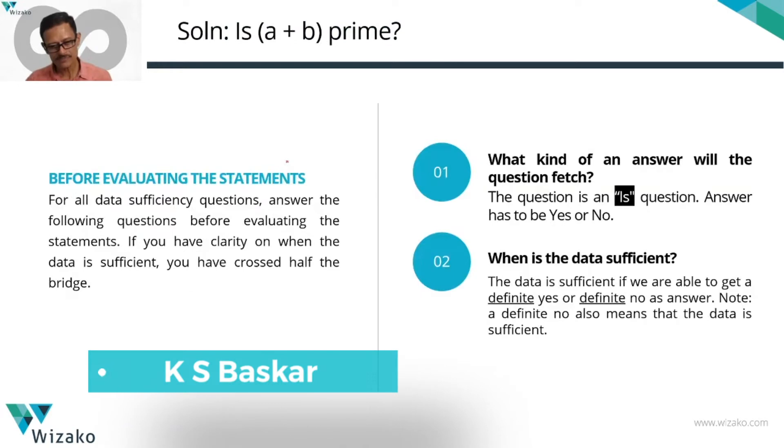When is the data sufficient? When we're able to get a definite yes or a definite no. If a + b is certainly prime, the information is sufficient. Or if a + b can never be prime, the data is also sufficient. Answering with a definite no means the data is sufficient. But if there's one instance where a + b is prime with this data and another instance where it is not, then the data is not sufficient.